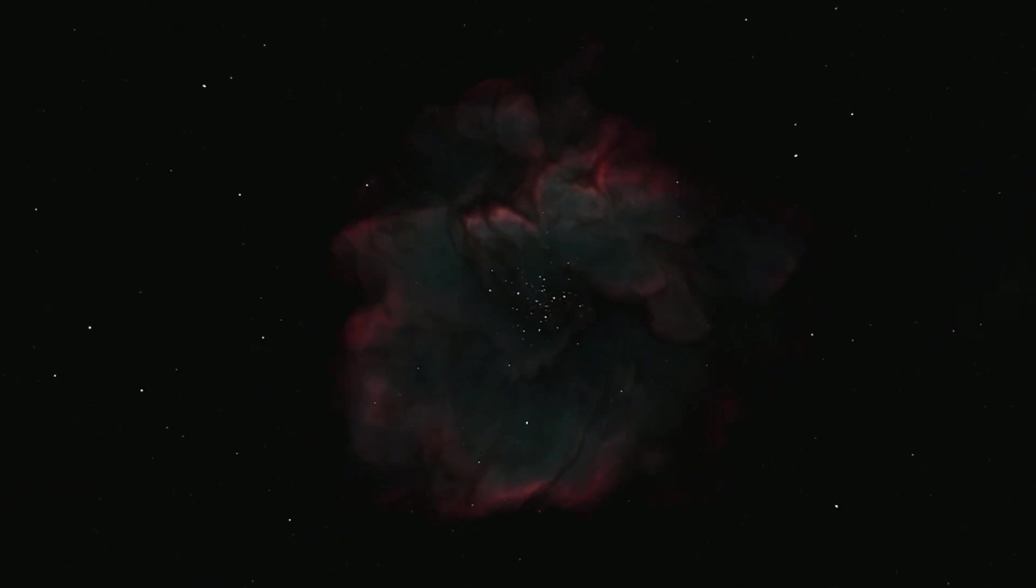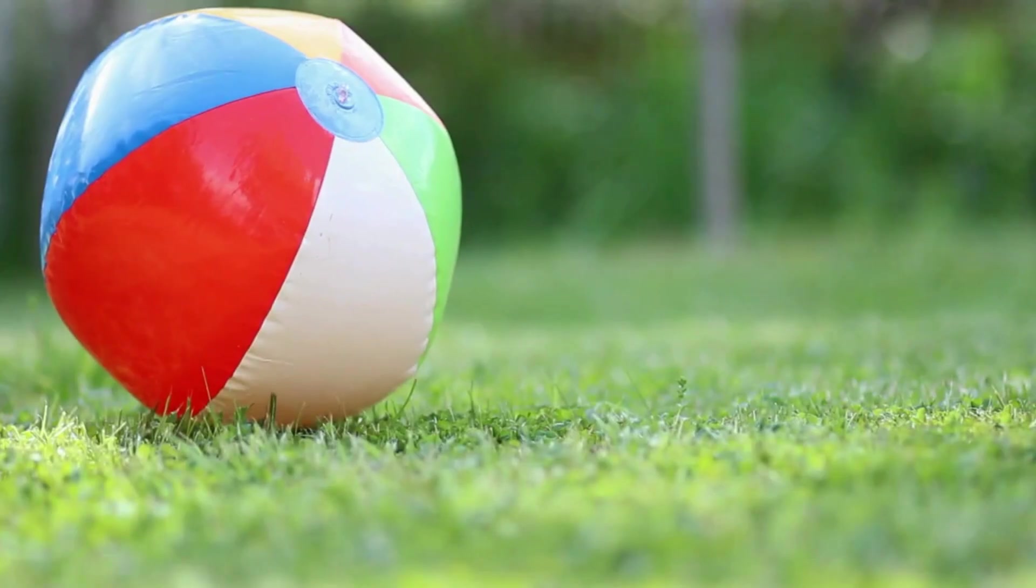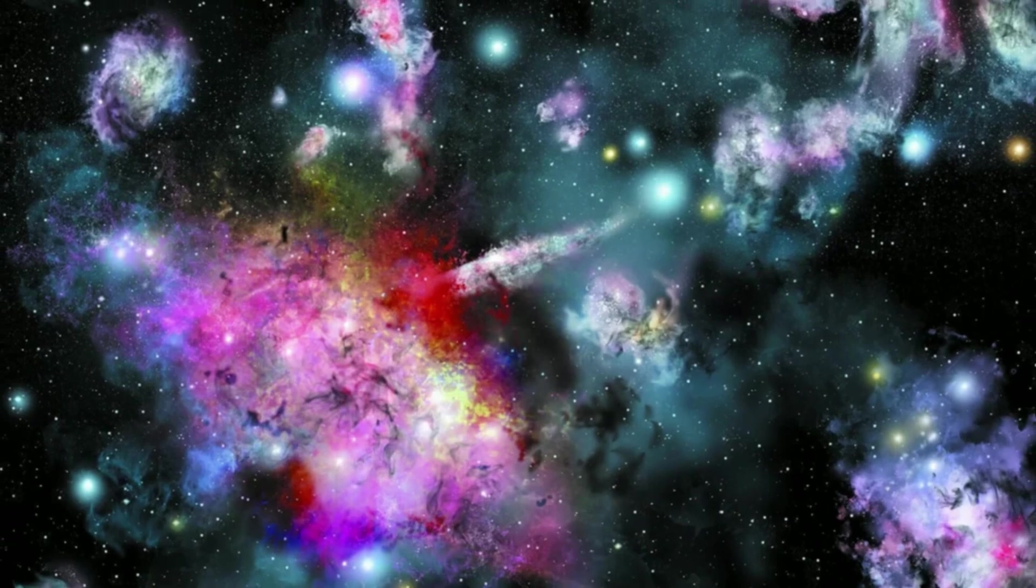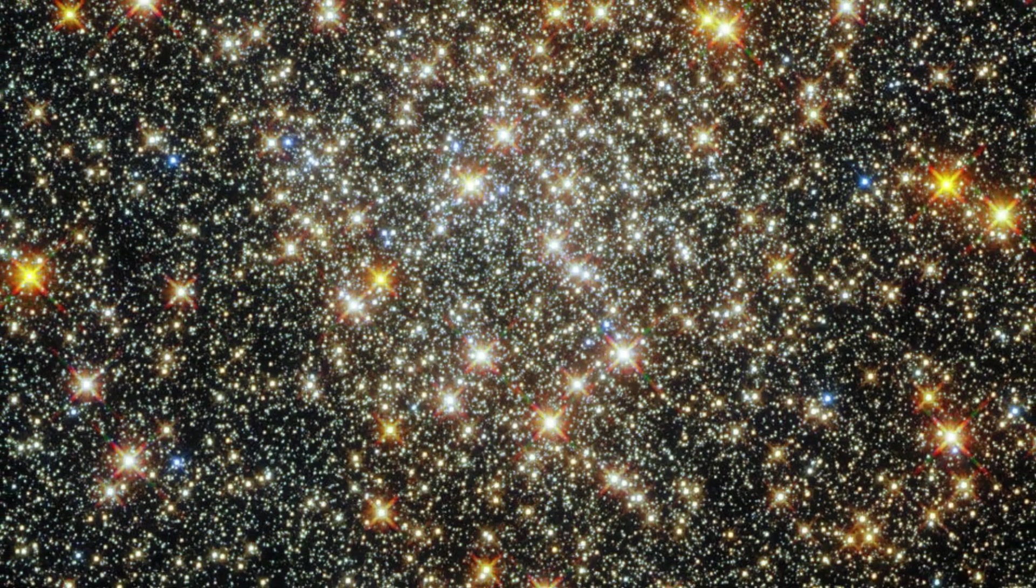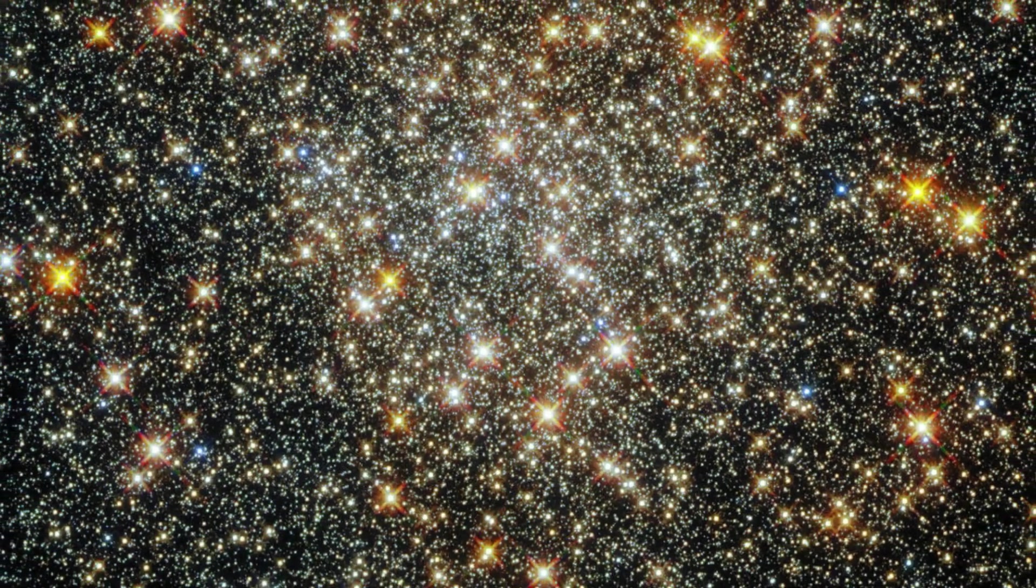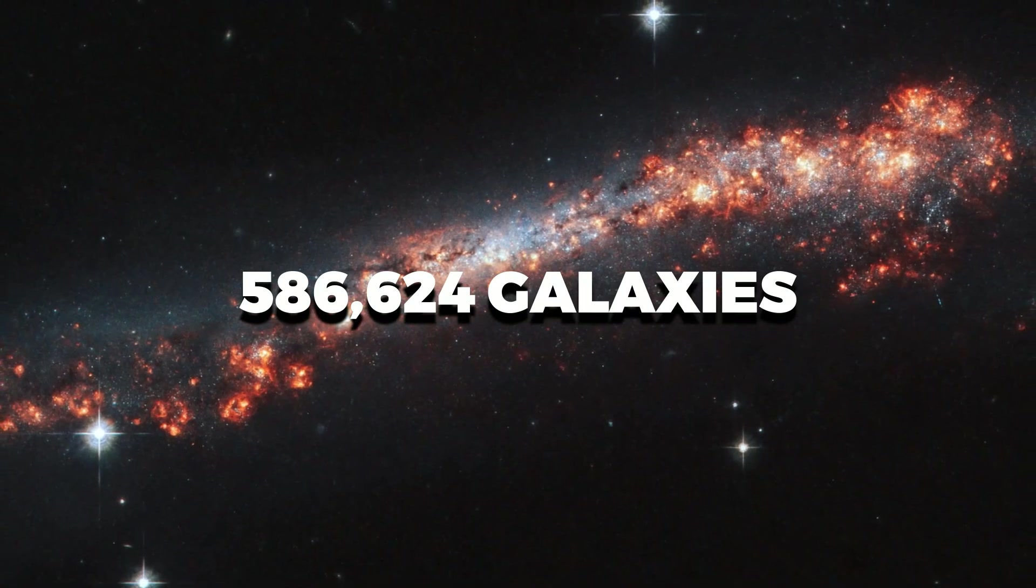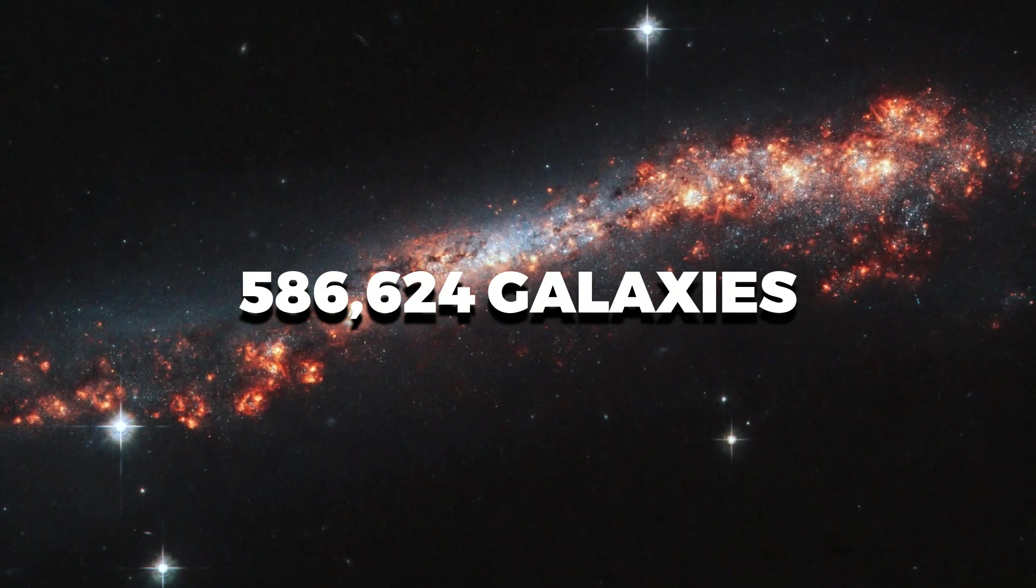23 orders of magnitude is a lot. It's about the same difference as between a beach ball and a cluster of galaxies. So it is likely that at some point we will be able to add a few zeros to our number of 586,624 galaxies.